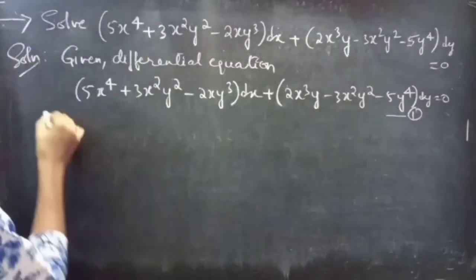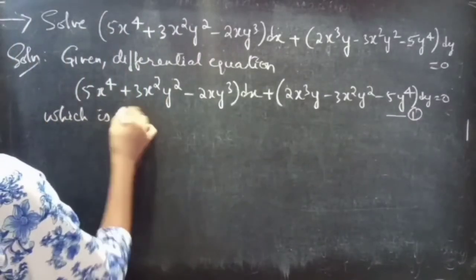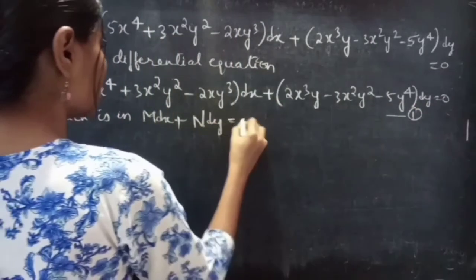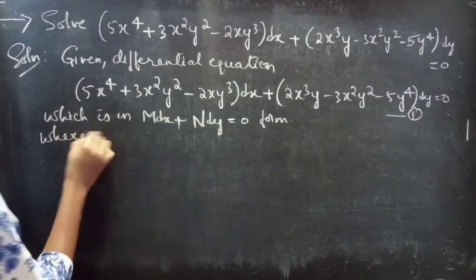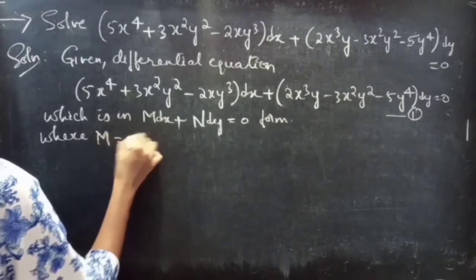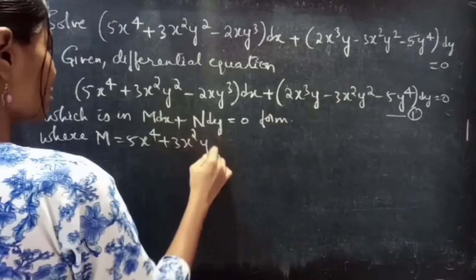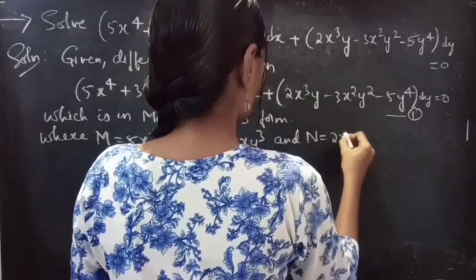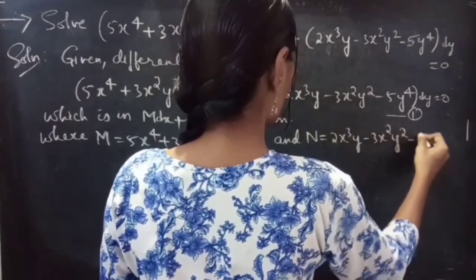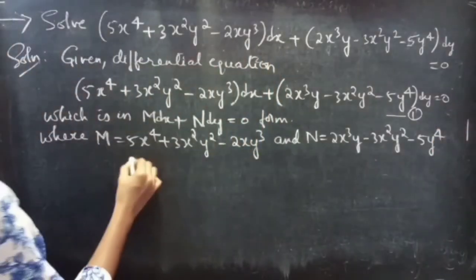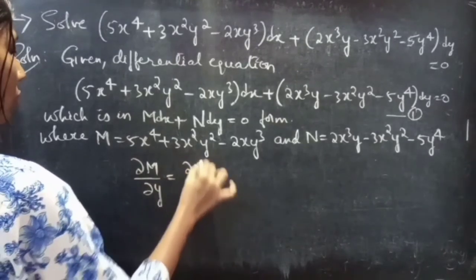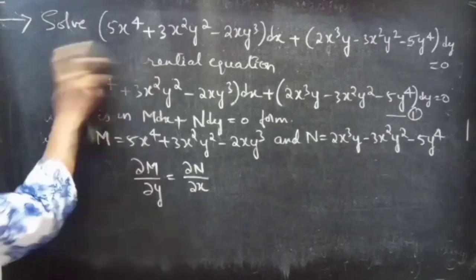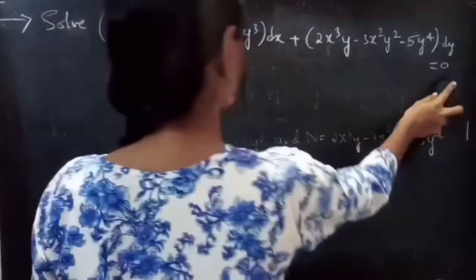Consider this as equation 1, which is in M dx + N dy = 0 form. By comparing, we get M = 5x⁴ + 3x²y² − 2xy³ and N = 2x³y − 3x²y² − 5y⁴. If the partial derivative of M with respect to y equals the partial derivative of N with respect to x, then the equation is exact. Now we will find both partial derivatives.